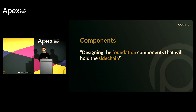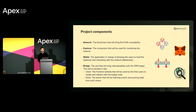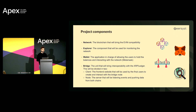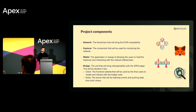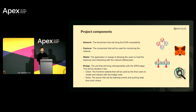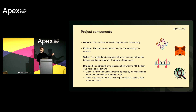Thinking about how to do it, we designed four main foundation components. First, the network — the blockchain that will bring EVM compatibility. Then an explorer, so users and developers can monitor and track transaction status, block production, and network health. Third, a wallet — users need to hold balances on the sidechain, and for that we have web3 wallets like MetaMask, the most-used wallet in the blockchain space, so we don't need to implement that. And finally, a bridge so users can move funds from the mainchain to the sidechain, bringing interoperability.